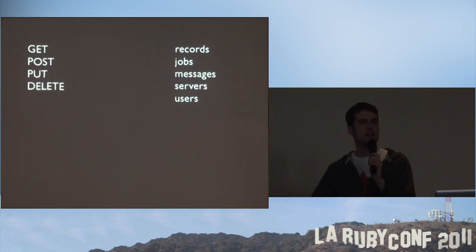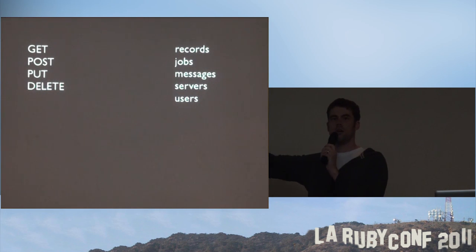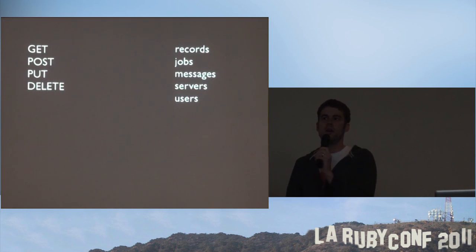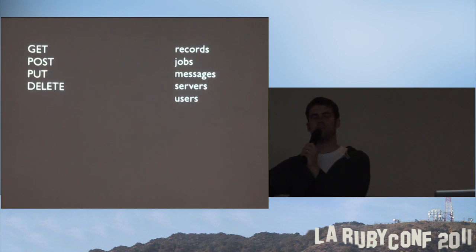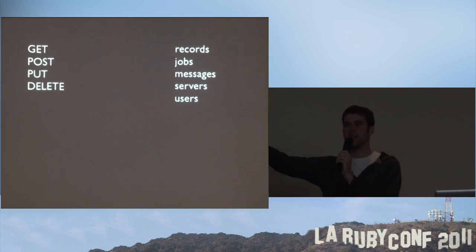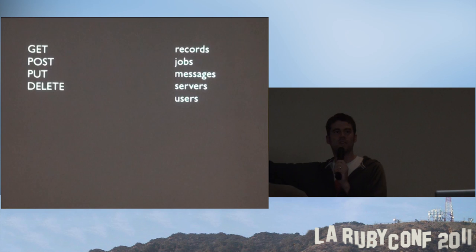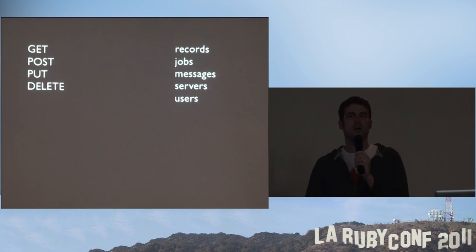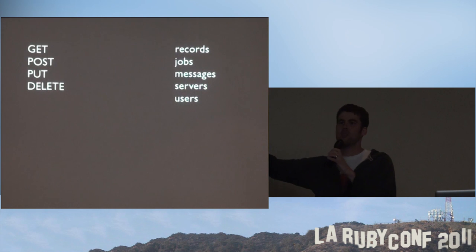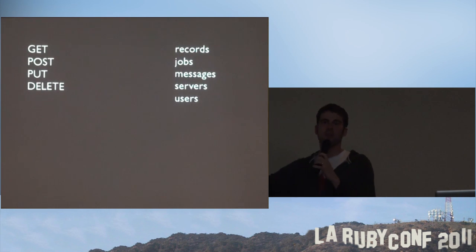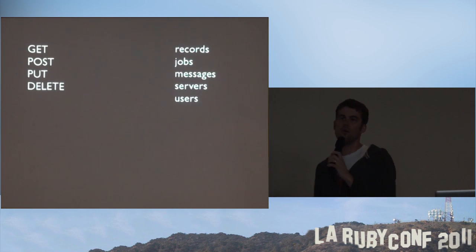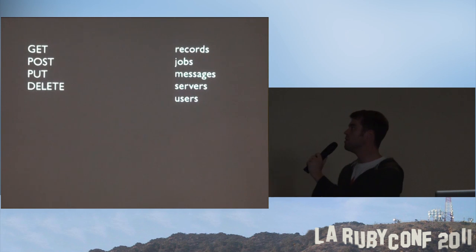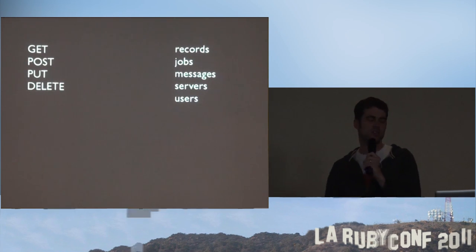REST means combining verbs and objects — whatever action you do, you end up with a verb (something that's done) and an object (something it's done to). That's why REST is an elegant way to define an API — it's kind of the way we think. You read information, you write information, or you delete information. And that information can be a record, or a job, or a message, or whatever your application is concerned with.